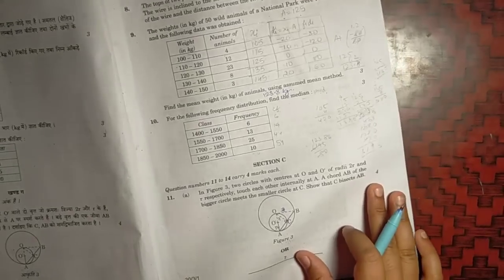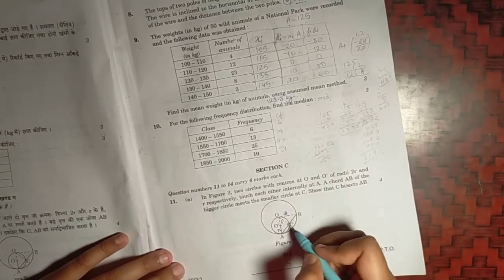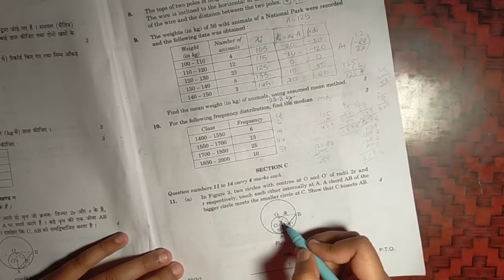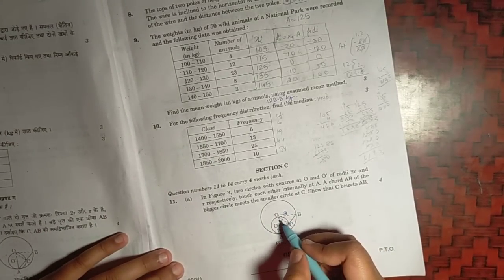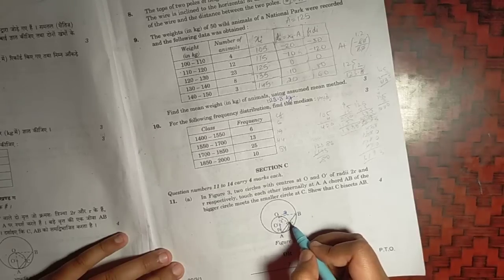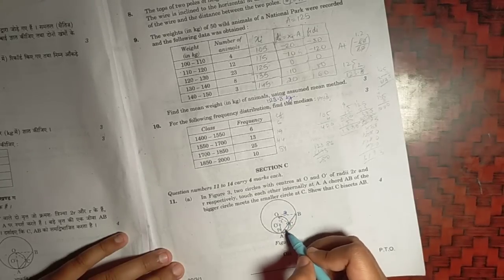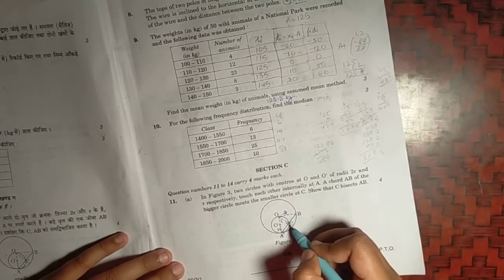For this question, section C, the eleventh question, you can take OA will be the diameter of this circle. So OC, A will be 90 degree, as the diameter on the semicircle extends a 90 degree angle.